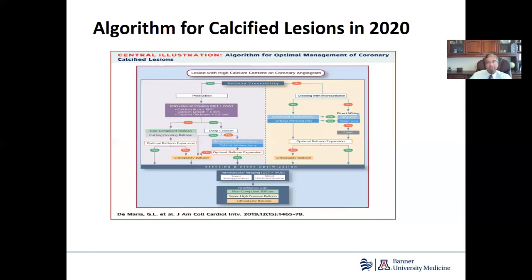In the rare instance that even after atherectomy the stent is suboptimally expanded, using super high-pressure balloons — currently unavailable in the United States but up to 40 atmospheres — or even contemplating using the lithotripsy balloon, which is also currently unavailable in the U.S. but in clinical trials, for optimizing stent outcomes.